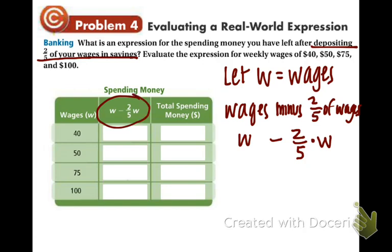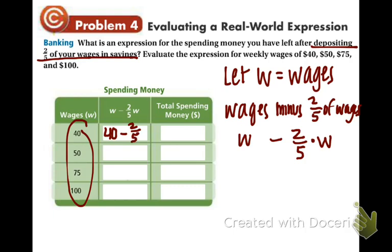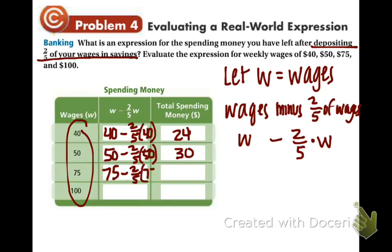Now we just need to plug in the values. 40 minus 2 fifths times 40 equals 24. 50 minus 2 fifths times 50 equals 30. 75 minus 2 fifths times 75 equals 45. And 100 minus 2 fifths times 100 equals 60.